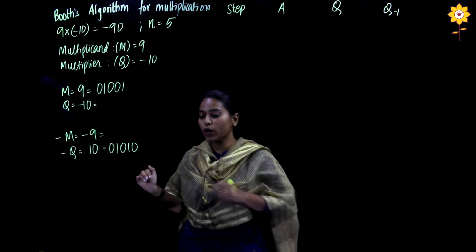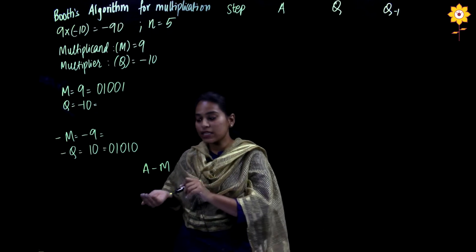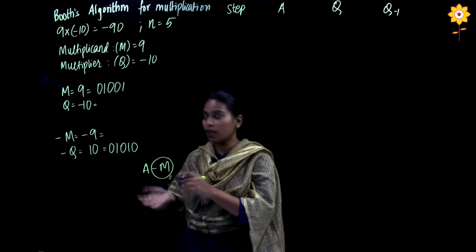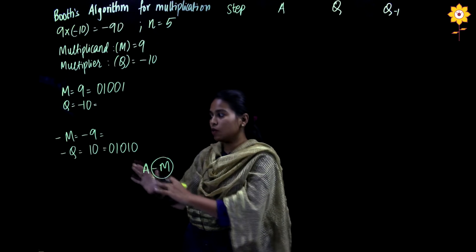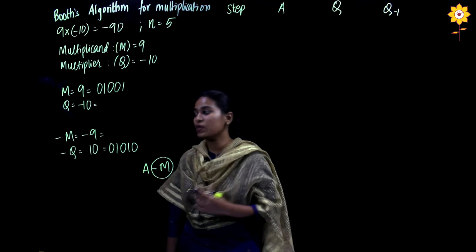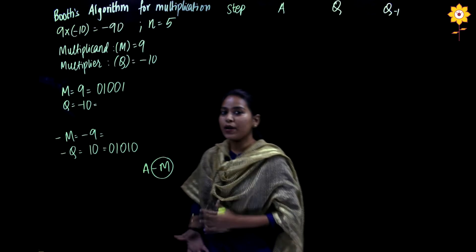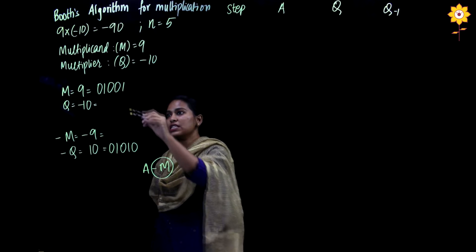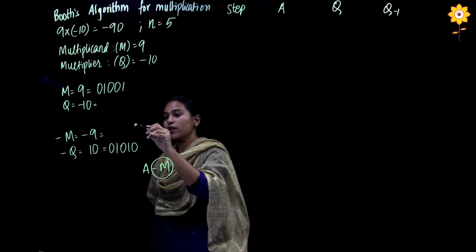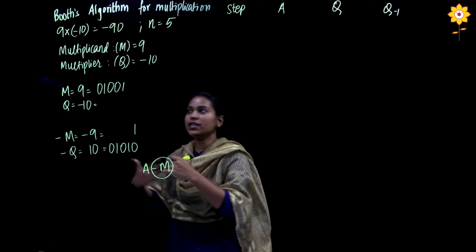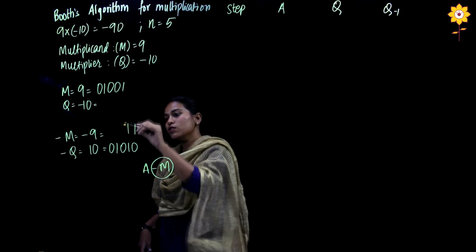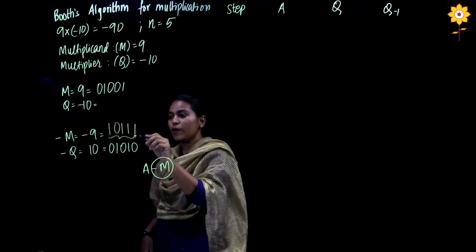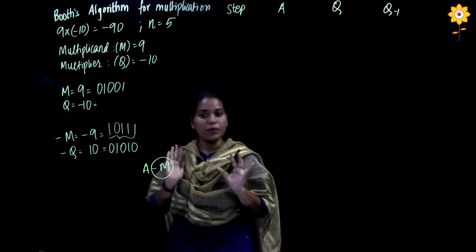We will compute minus M beforehand for reference, because we also have to do A minus M, which means adding the 2's complement of M with A. To find the 2's complement of 9 (01001), we keep the LSB as it is — LSB is 1 — then invert all the remaining bits: 0 becomes 1, 0 becomes 1, 1 becomes 0, and 0 becomes 1. So minus M is 10111.